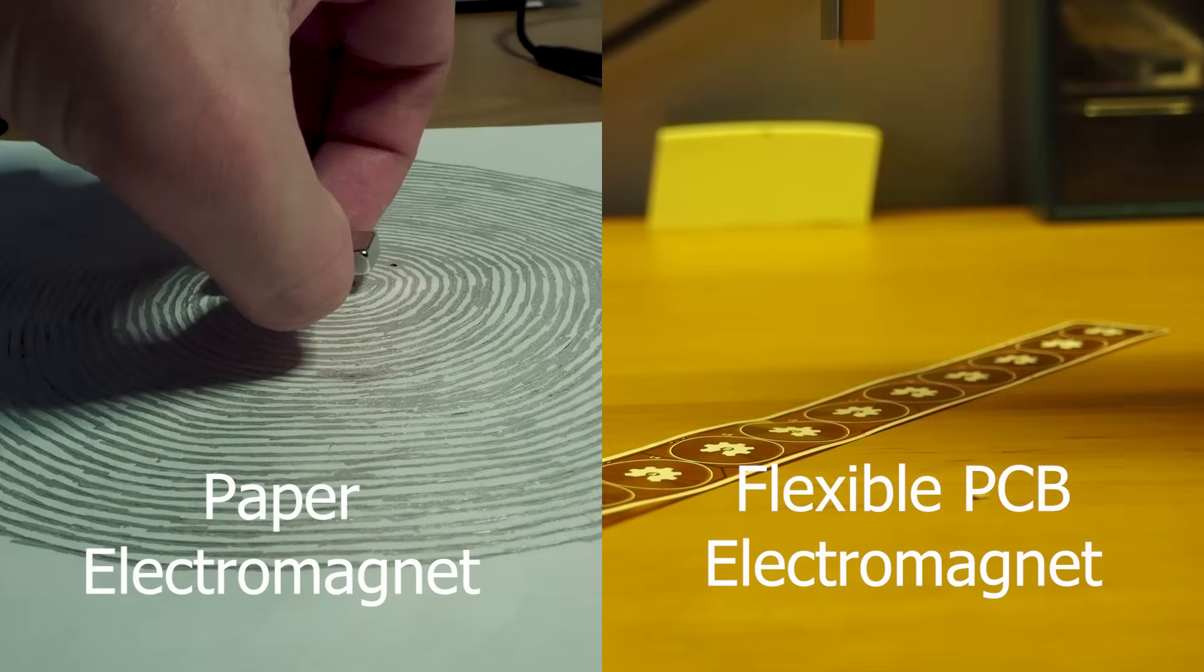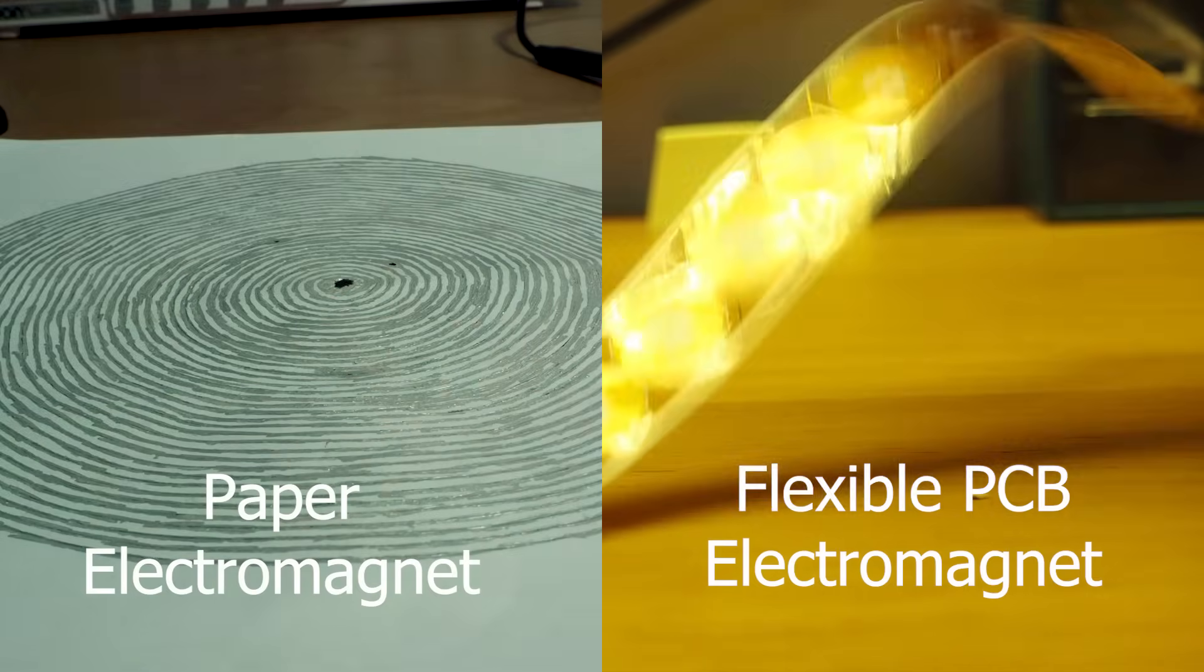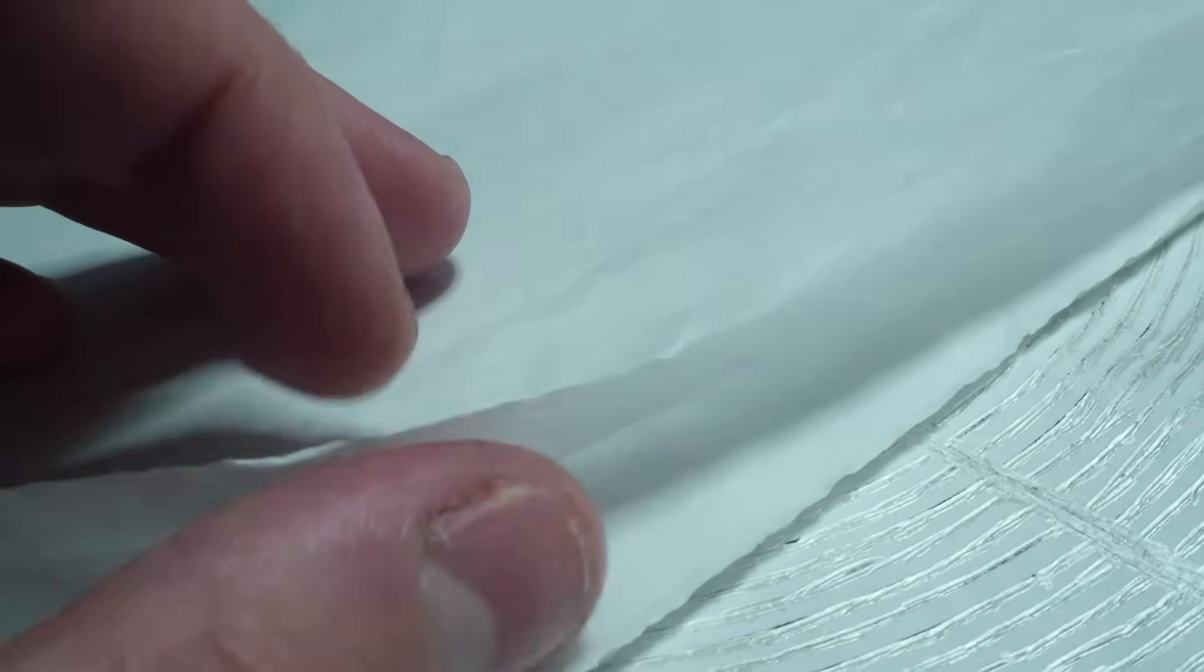Now this paper electromagnet is not as efficient as my flexible PCB actuator. I couldn't just lift the paper with the magnet. I was going to try and improve its efficiency by making the tracks a little bit thicker and using a thinner and lighter paper and printing it on both sides, but unfortunately I ran out of ink.